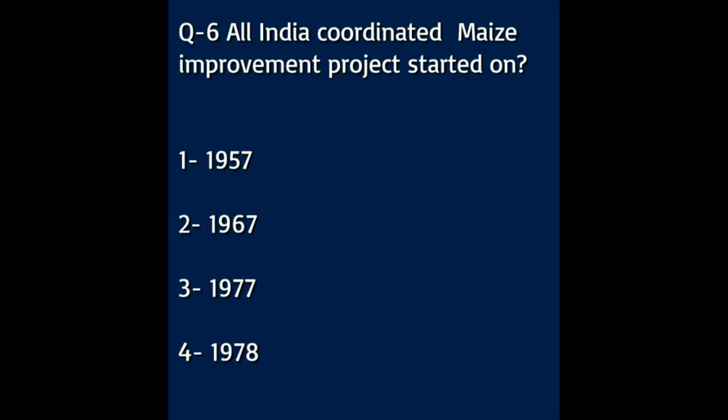Question number six: All India Coordinated Maize Improvement Project started in — Option A: 1957. Option B: 1967. Option C: 1977. Option D: 1978. The answer to this question is 1957.